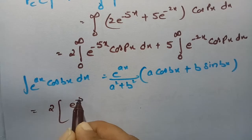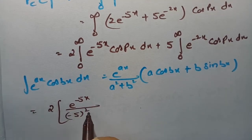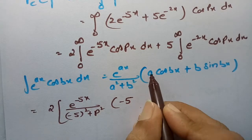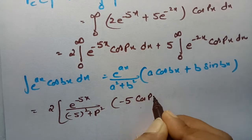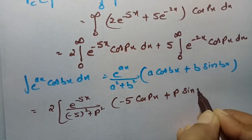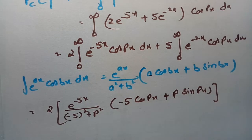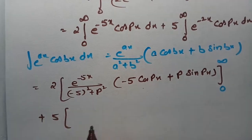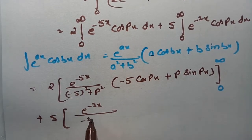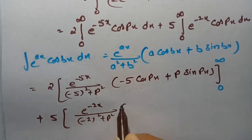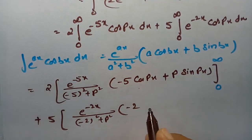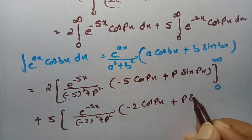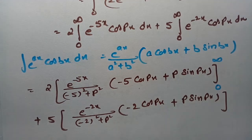Substituting: 2 times e power minus 5x divided by minus 5 squared plus p squared, times minus 5 cos px plus p sin px, between limits 0 to infinity, plus 5 times e power minus 2x divided by minus 2 squared plus p squared, times minus 2 cos px plus p sin px, between limits 0 to infinity.